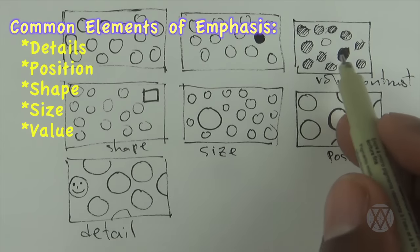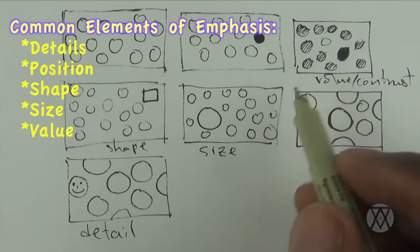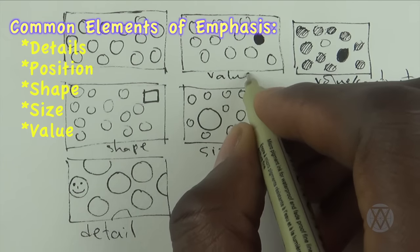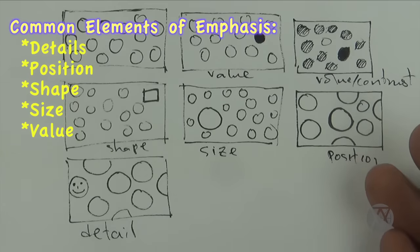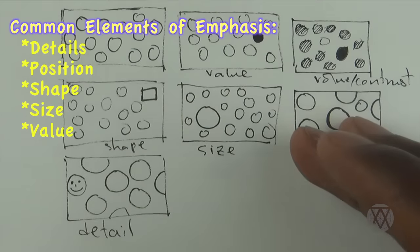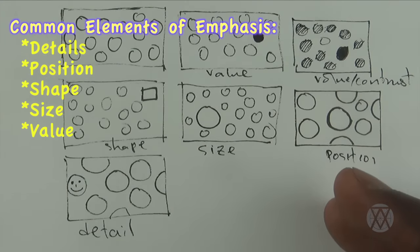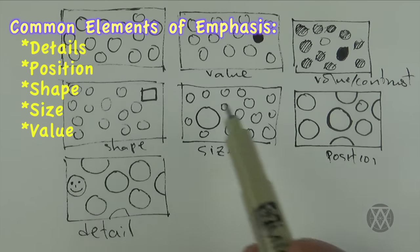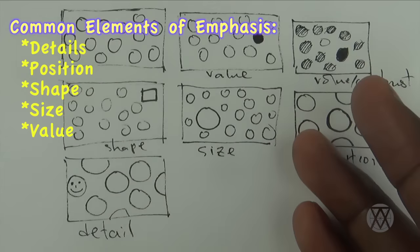You can also use, which is perhaps one that we do a lot without even noticing it - if you have a whole bunch of circles, they're all pretty much the same size, same value, everything else, and then there's one that has more information, detail. So detail is definitely one that's good to use.